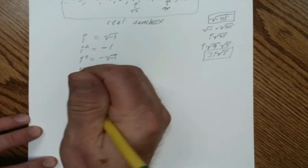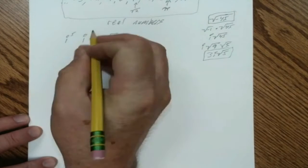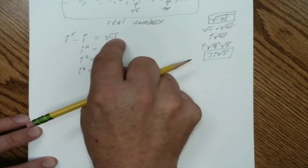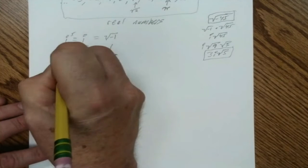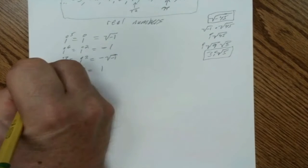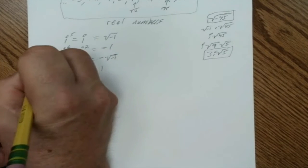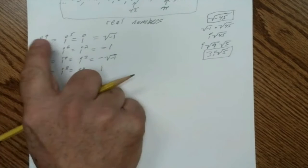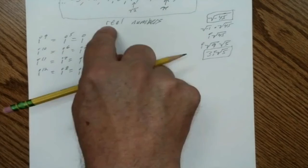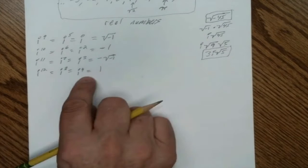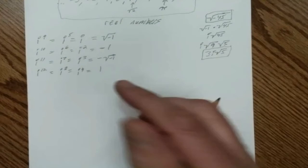Beyond i to the fourth, i to the fifth equals i to the first because it's i times i⁴, and i⁴ equals 1, so 1 times i is just i. The values just repeat — they follow a pattern. i⁴ equals i⁸ equals i¹², i³ equals i⁷ equals i¹¹, and so on. These are the only values we will end up with as we keep raising the exponent of i.